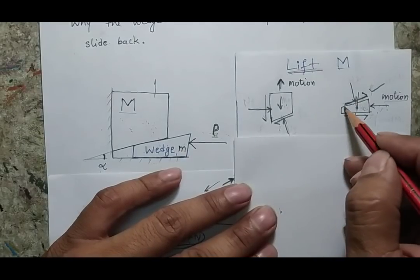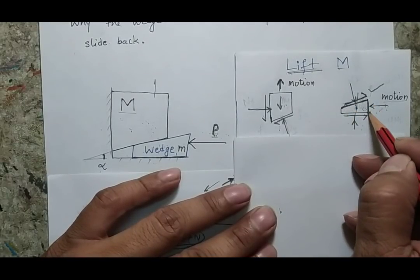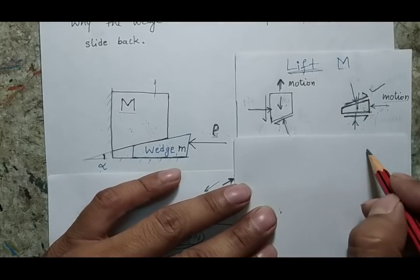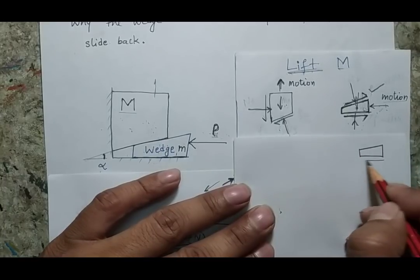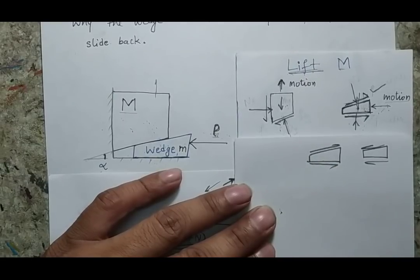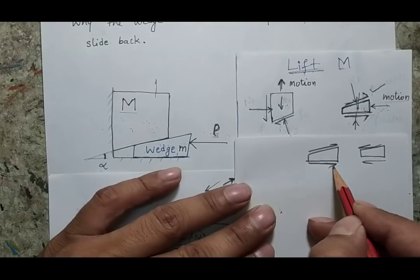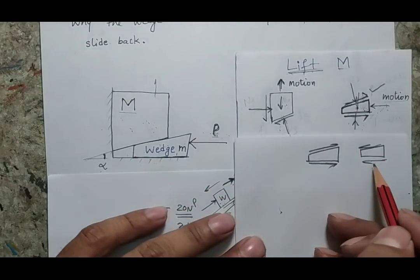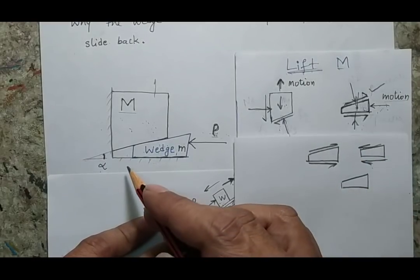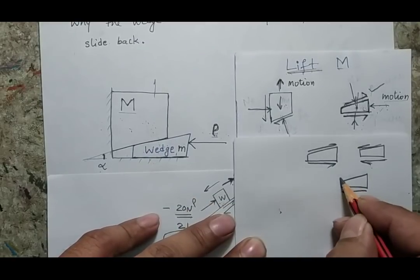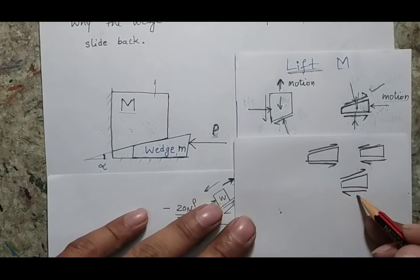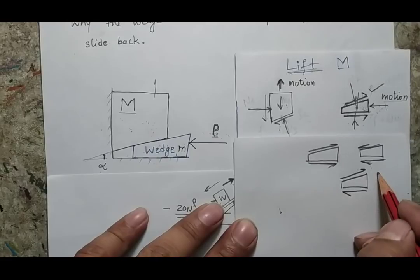A useful trick: in all cases, if you are able to define one friction direction on the wedge, the other direction will also be in the same direction. That means both friction forces on the wedge will either both act in one direction or both in the opposite direction. You will not find a condition where one force acts in one direction and the other acts in the opposite direction. If you get two opposite directions, please go back and check, because that is not the general case.